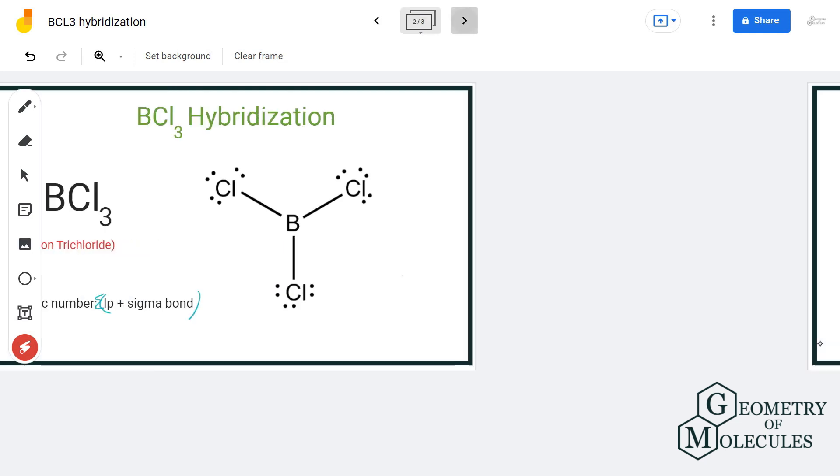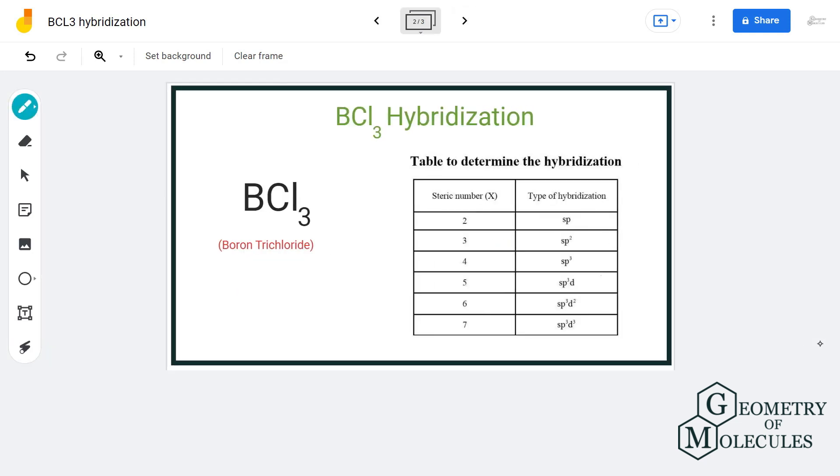Let us add the two. We have 3 sigma bonds plus 0 lone pairs that equals to the steric number of 3. Now, that corresponds to sp2 hybridization.